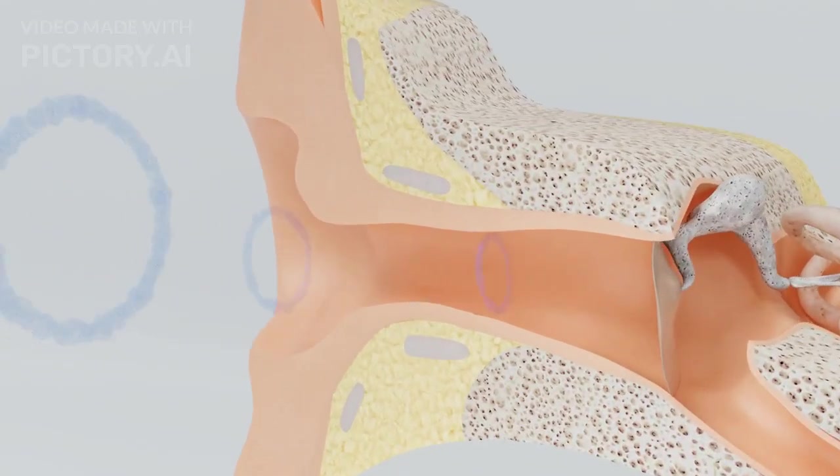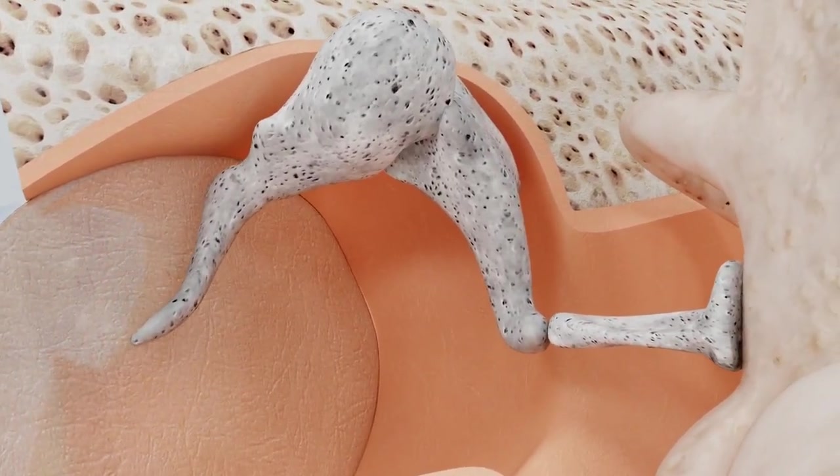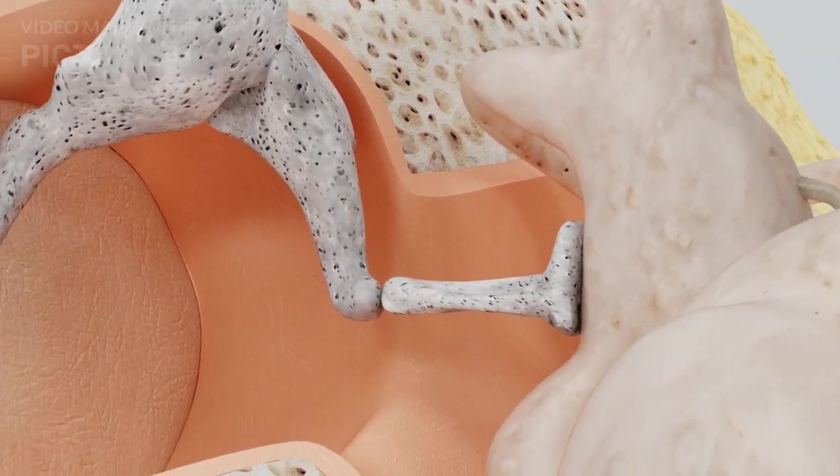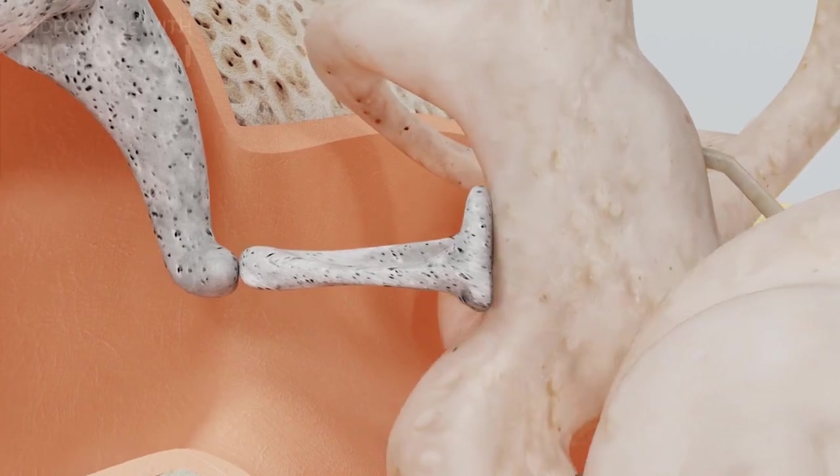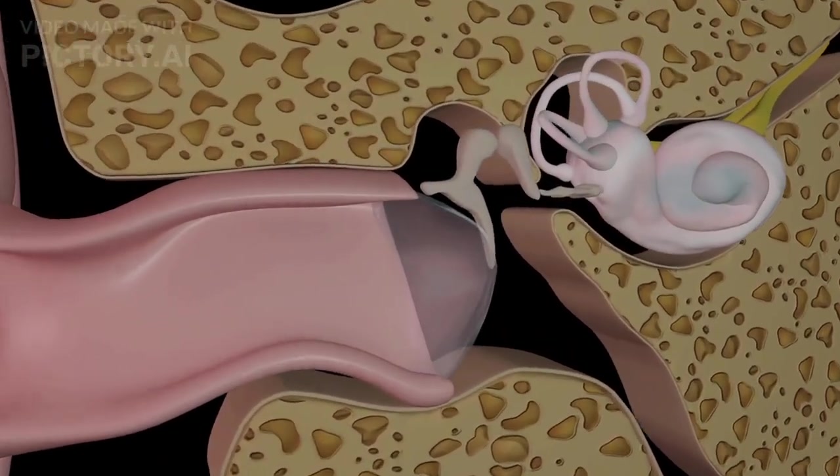These sound waves travel through the ear canal to reach the eardrum, a thin membrane that vibrates in response to sound waves. These vibrations correspond to the frequency and intensity of the sound.